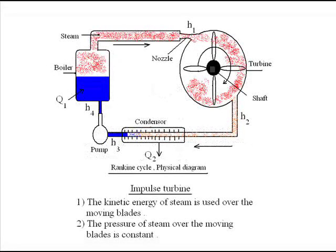Hello students. Today we will learn how a steam turbine works, and we will learn about a particular type of turbine — the impulse turbine with axial flow of steam. First, we get a review of the Rankine cycle. In the Rankine cycle, there are four elements: the boiler, the turbine, the condenser, and the pump. In the boiler, liquid water is converted into high-pressure steam.